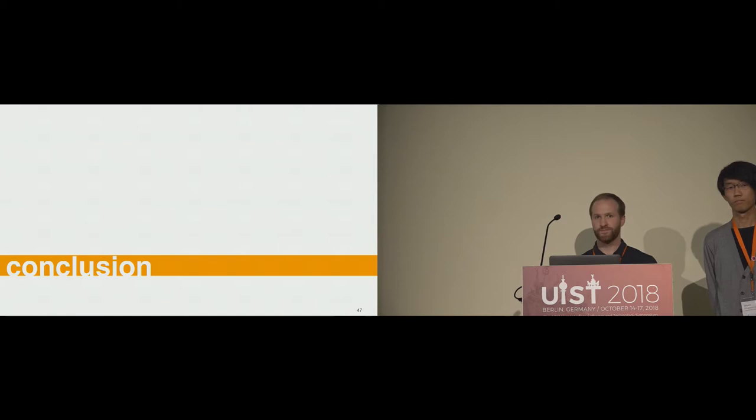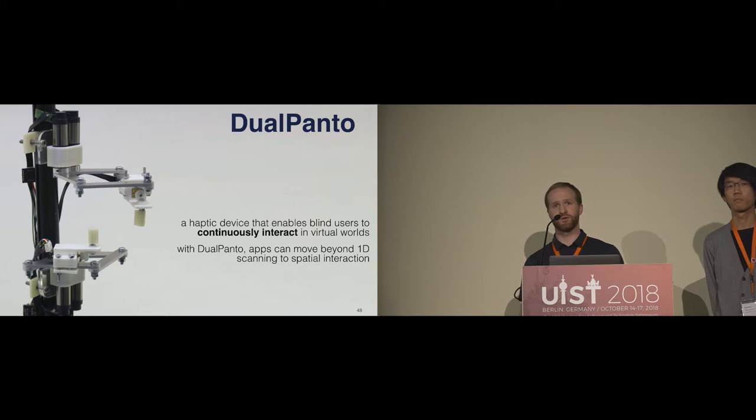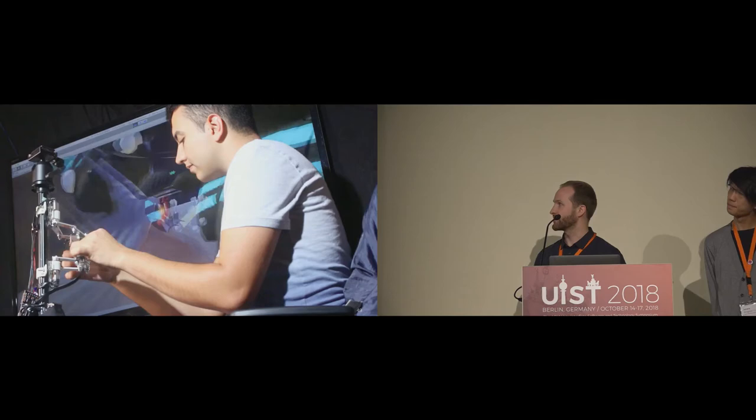In conclusion, Dual Panto is a haptic device that enables blind users to continuously interact in virtual worlds. With Dual Panto, apps can move beyond 1D scanning to actual spatial interaction.